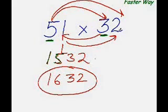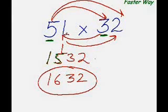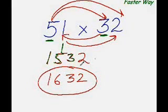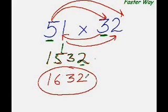Then I multiply the first digit again with the other digit of this number — 5 times 2 is 10. But before I put down 10, I add to it the product of the second digit of the first number and the first digit of the second number: 3 times 1 is 3, and 10 plus 3 is 13. For the last digit, I just multiply the last digits of both numbers: 1 times 2 is 2. So the answer is 15 + 1 = 16, and 32.